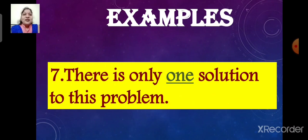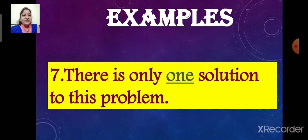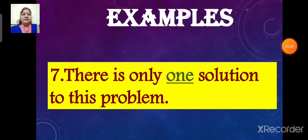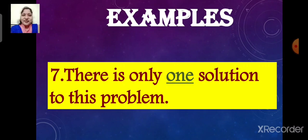There is only one solution to this problem. Here, the underlined word is one. So the word one is an adjective. It describes the noun solution. The word one tells us the number of solutions to the problem. So the word one is an adjective of number.